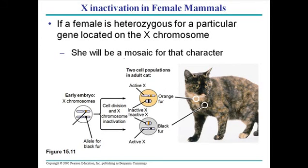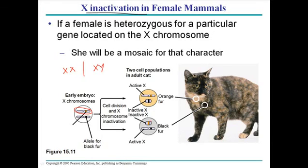Now let's talk about the last part of today's discussion: X inactivation in females. As we know, female mammals have two X chromosomes. What they do is make one chromosome active and make the other chromosome inactive by condensing it into a tight structure called the Barr body. This condensed Barr body forms a very small, inactive X chromosome.